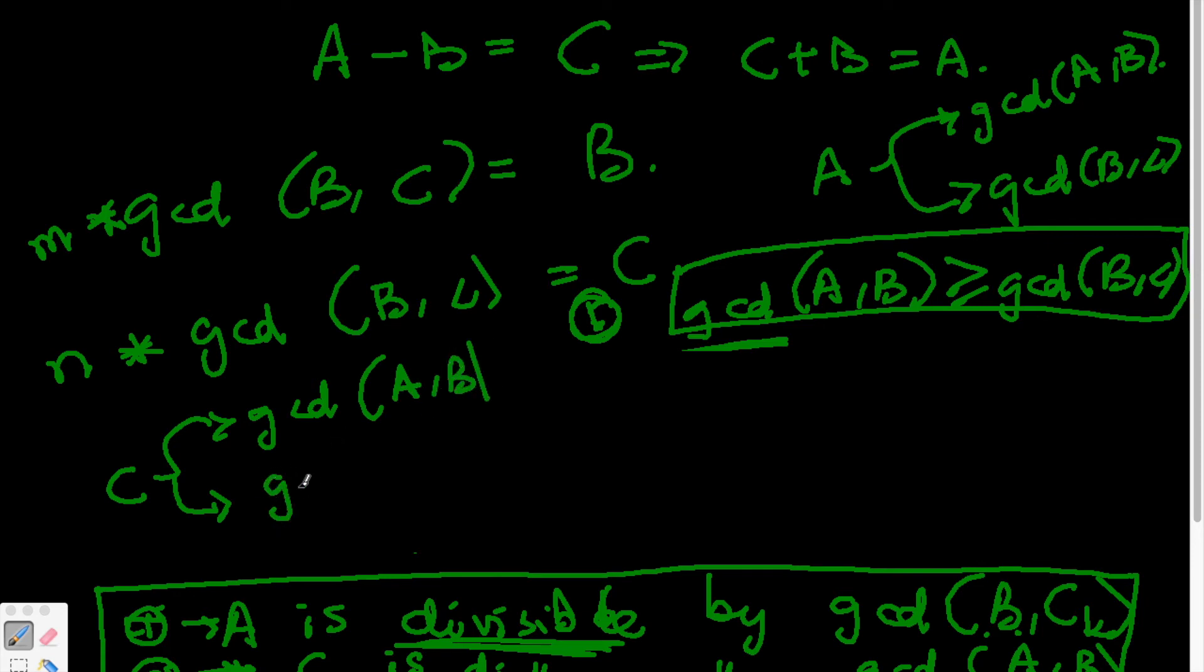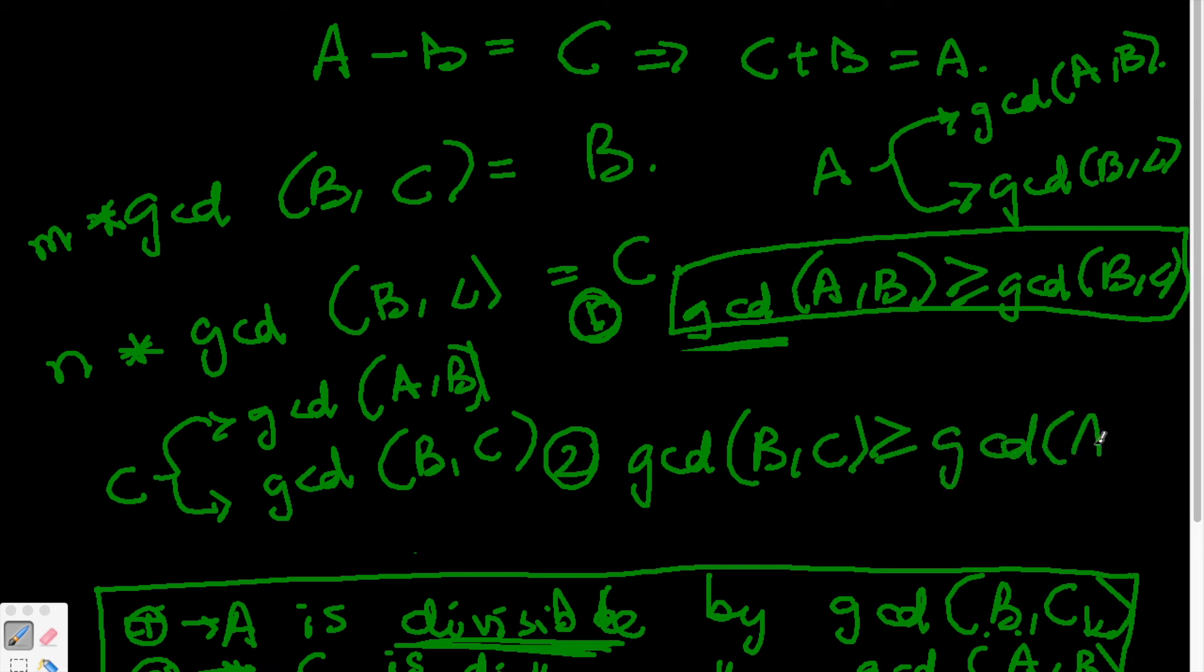That's down there as point number two and the gcd(B,C). With this, the greatest divisor for both B and C is gcd(B,C). It has to be greater than any other divisor. And one of the divisors is gcd(A,B).